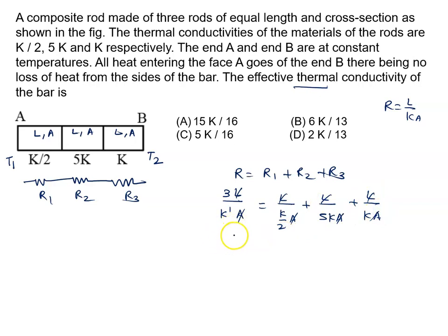Now 3/K' can be written as - we have to solve this - it is 2/K plus 1/5K plus 1/K plus 1/K. This equals 16/5K. So we can say 3/K' is 16/5K.